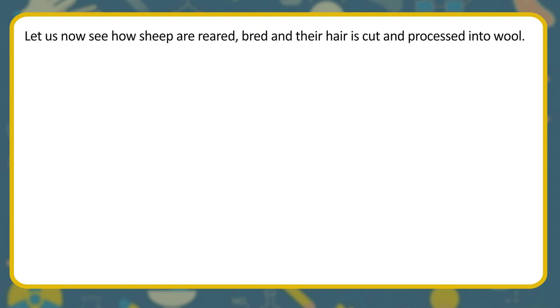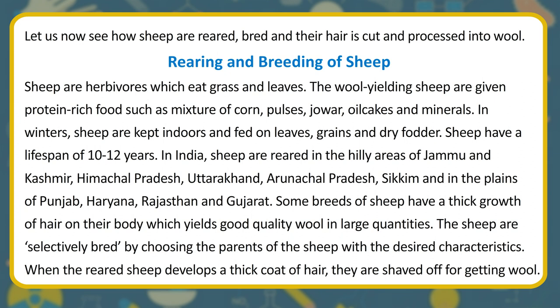Rearing and Breeding of Sheep: Sheep are herbivores which eat grass and leaves. Wool-yielding sheep are given protein-rich foods such as a mixture of corn, pulses, jowar, oil cakes, and minerals. In winters, sheep are kept indoors and fed on leaves, grains, and dry fodder. Sheep have a lifespan of 10–12 years. In India, sheep are reared in the hilly areas of Jammu and Kashmir, Himachal Pradesh, Uttarakhand, Arunachal Pradesh, Sikkim, and in the plains of Punjab, Haryana, Rajasthan, and Gujarat. Some breeds of sheep have a thick growth of hair which yields good quality wool in large quantities. Sheep are selectively bred by choosing parents with the desired characteristics. When the reared sheep develops a thick coat of hair, it is shaved off for getting wool.